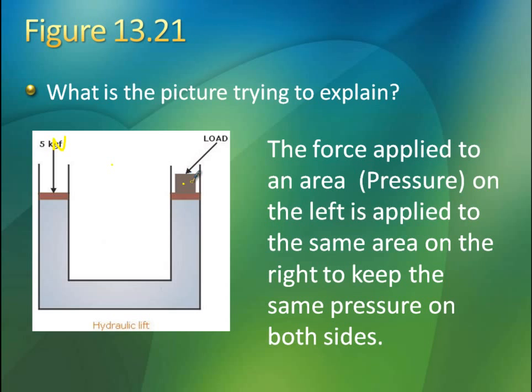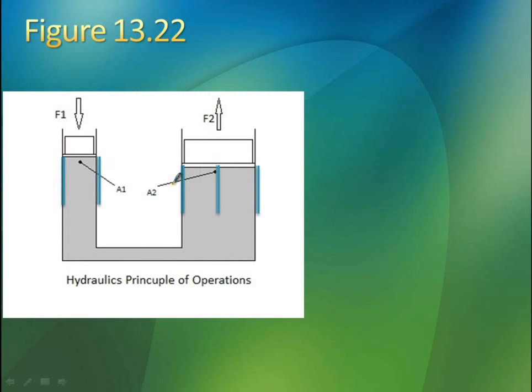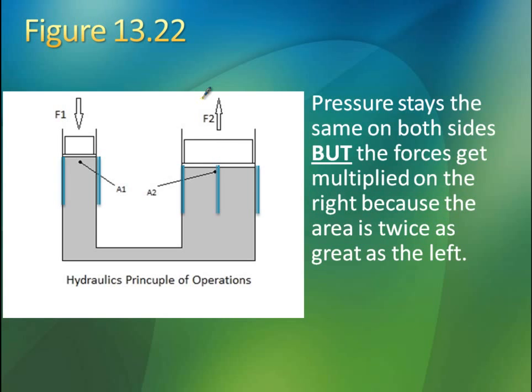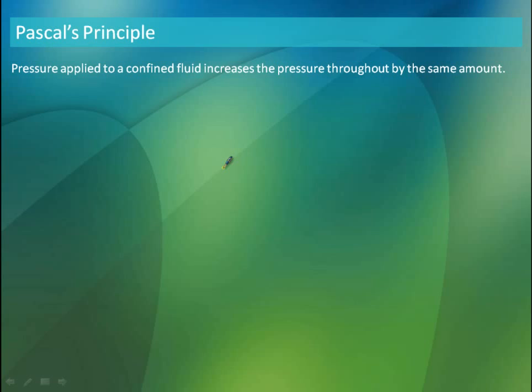So the force applied to an area on the left is applied to the same to keep the same pressure on both sides. So we know P1 over here is going to equal P2. So whatever force we apply here is going to affect our stuff over here. And that's how hydraulics work. So we make this area over on this side bigger. So that means we get a bigger force to compensate for the bigger area to make sure P1 still equals P2. So that means we can apply less force here to lift a heavier object. Because pressure stays the same on both sides but the forces get multiplied on the right because the area is twice as great as the left. So smaller force to lift a bigger thing if you have a bigger area on this side. So that's why we use hydraulics.